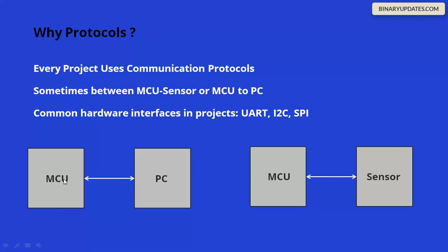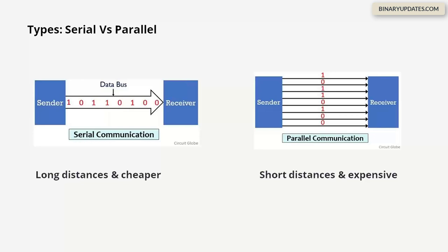Always in embedded systems you want either the microcontroller to talk to sensors, or the microcontroller to talk to your computer. If you connect a sensor to your microcontroller, you need some way to see the sensor data on your PC or serial monitor screen. You need a protocol for that communication — between your microcontroller and sensors, or between your microcontroller and your computer.